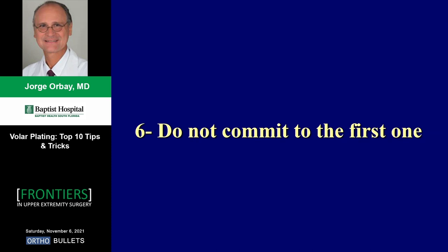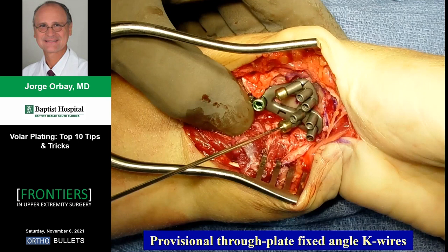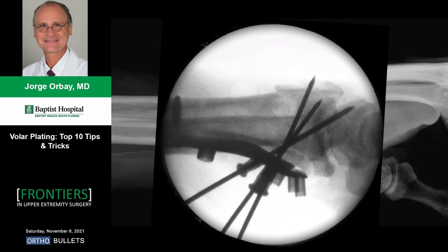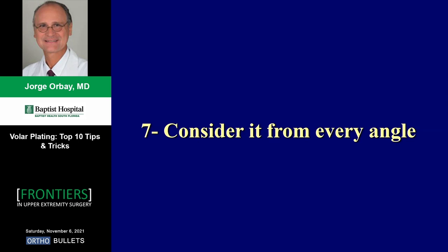Apply the plate to the proximal fragment, pull on the fingers, and push on the dorsal skin with one hand to hold the reduction. Do not commit to the first attempt — perform your reduction and get temporary fixation, but don't finalize it until you're absolutely sure it's perfect. Place the plate two millimeters proximal to the watershed line and aim to get screws two millimeters below the dorsal subchondral plate.